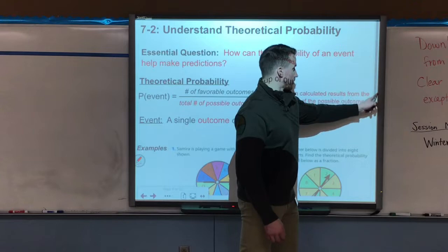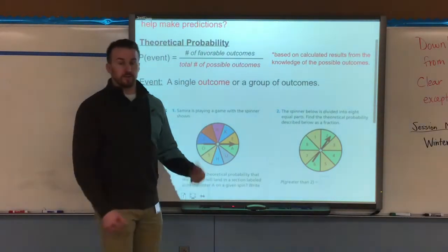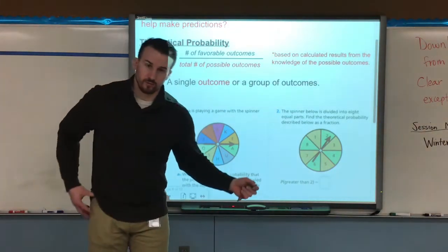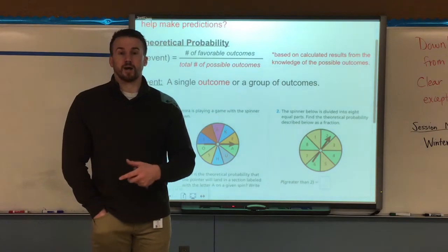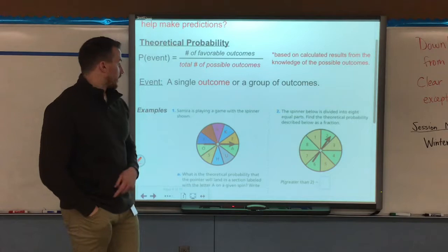Now it's also important to understand what an event is. An event is a single outcome or a group of outcomes. It can be a single outcome or it can be grouped. So if I say what's the probability of an even number on a die, well two, four, and six are even. So it would be three out of the six sides as my fraction.